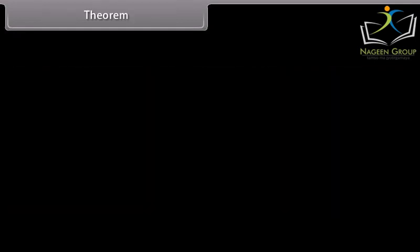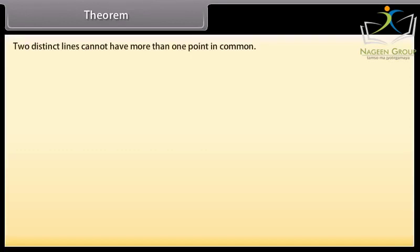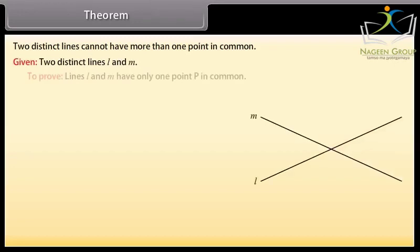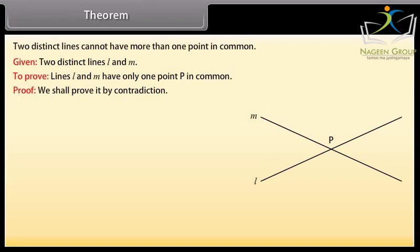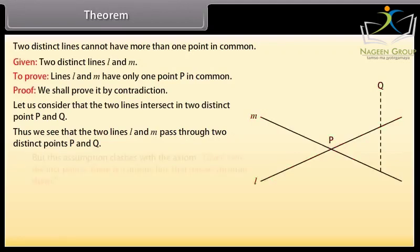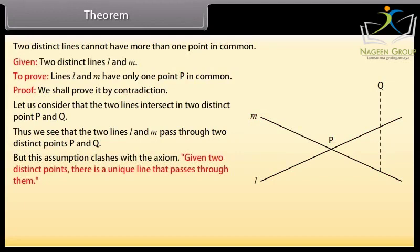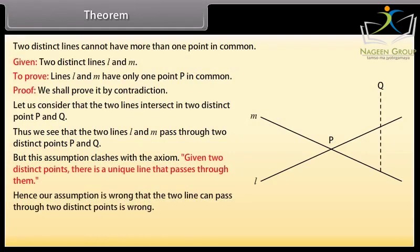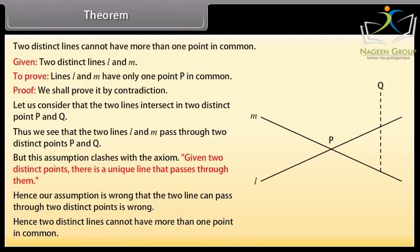Theorem: Two distinct lines cannot have more than one point in common. Given two distinct lines L and M, we have to prove that lines L and M have only one point P in common. Proof: We shall prove it by contradiction. Let us consider that two lines intersect in two distinct points P and Q. Thus, we see that the two lines L and M pass through two distinct points P and Q. But this assumption clashes with the axiom: given two distinct points, there is a unique line that passes through them. Hence, our assumption is wrong that the two lines can pass through two distinct points. Hence, two distinct lines cannot have more than one point in common.